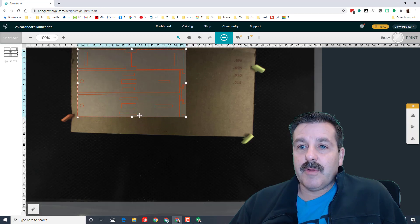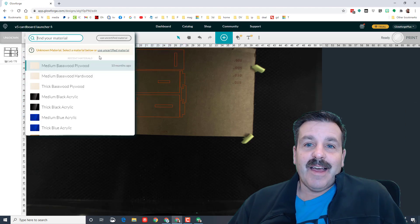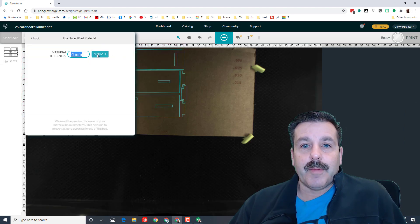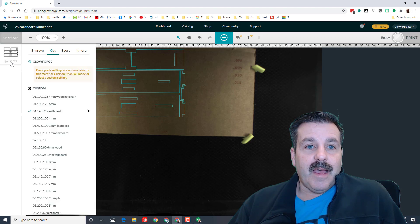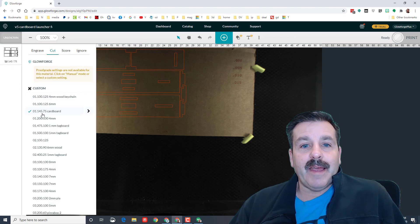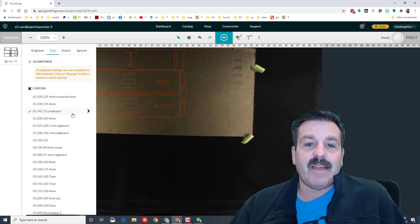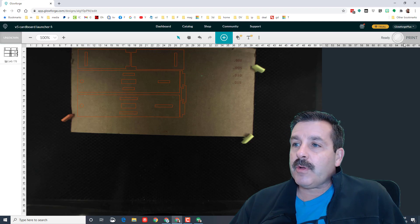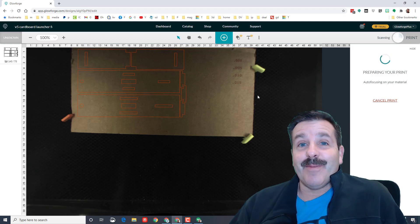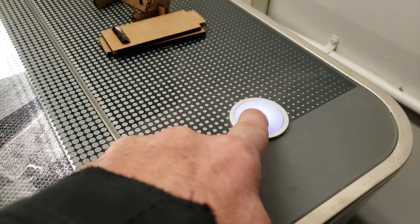There is the design. I'm gonna arrange it so it cuts out nifty. I know it won't fit the other way, I already tested that. I set it for my four millimeter cardboard. I have got my one pass, 145 speed, 75% power cardboard settings. It's time to make something awesome. Gotta love hitting that magic button.